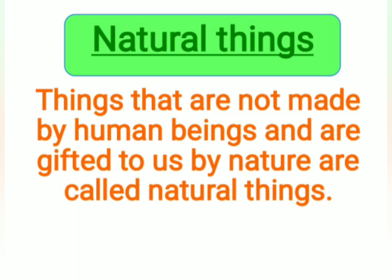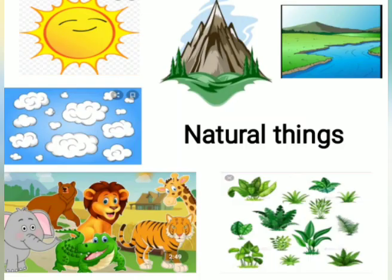Now let's see what are natural things. Things that are not made by human beings and are gifted to us by nature are called natural things. We see beautiful lakes, mountains, forests, animals, birds, etc. around us. They are all naturally present in the world and are called natural things. Sun, mountain, river, cloud, animal, plants — they all are natural things. So all living things and even some of the non-living things are natural things.